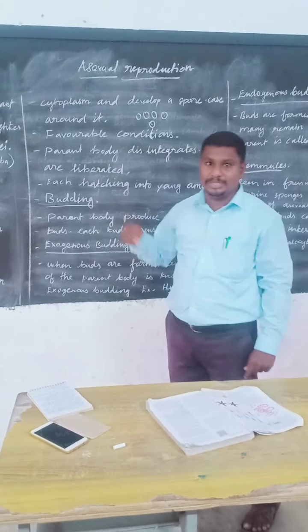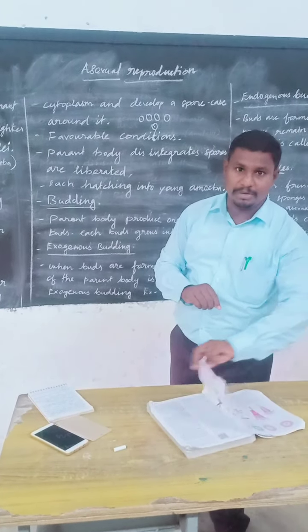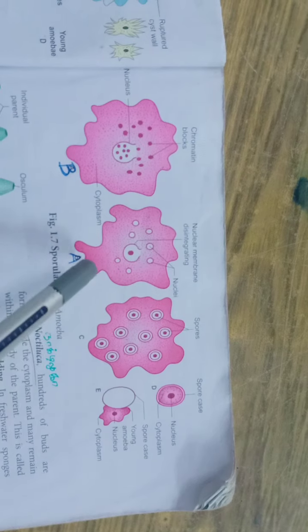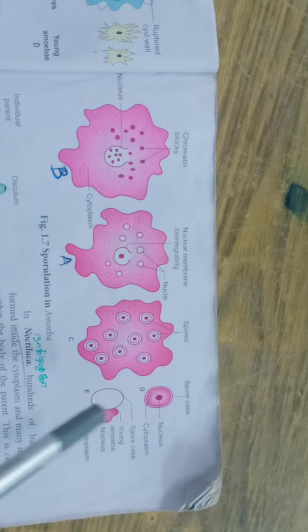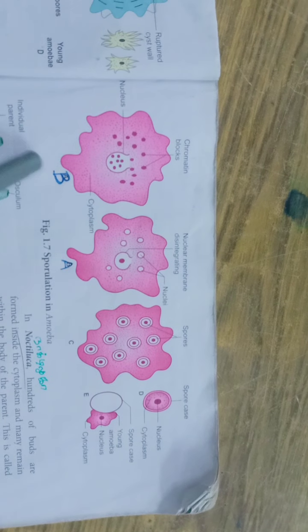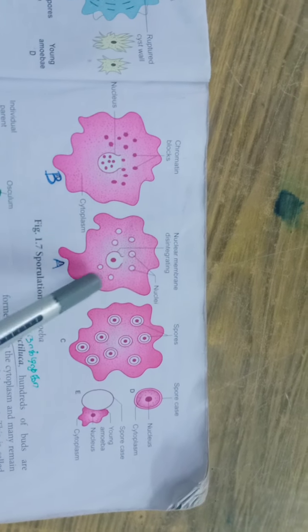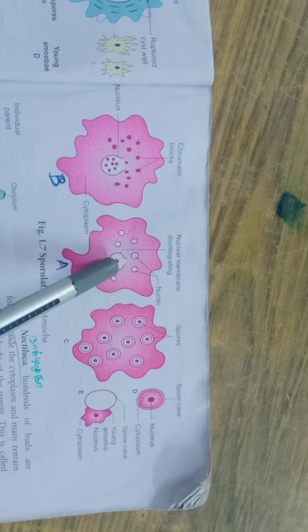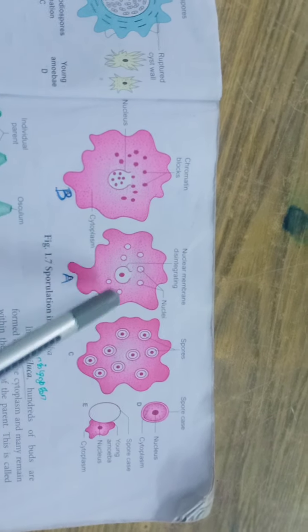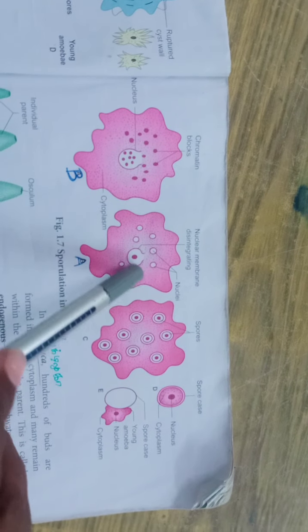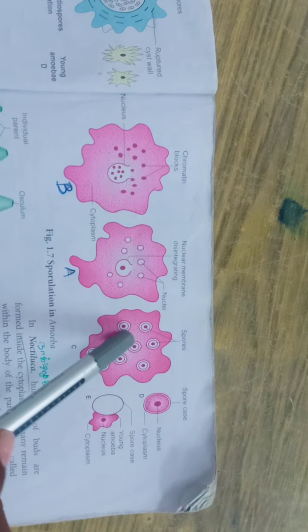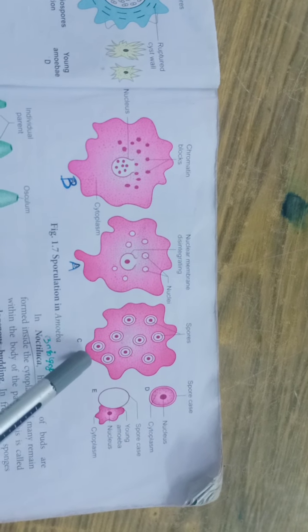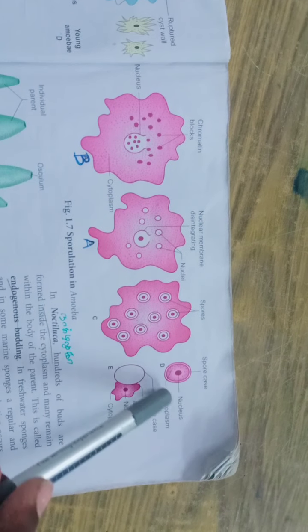Now we are going to see this picture. Let's explain the picture. This is A, this is B, this is C, this is D, this is E. If you look at the diagram, this is Amoeba. The nuclear membrane will disintegrate and break. It will surround the cytoplasm. It is a spore case.